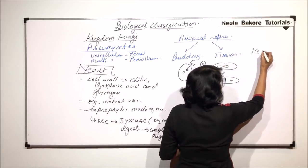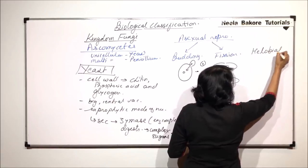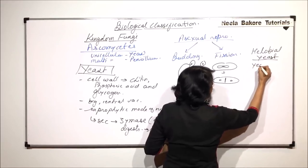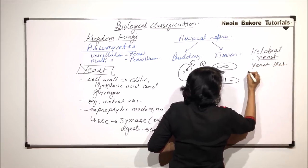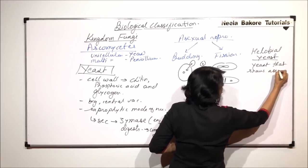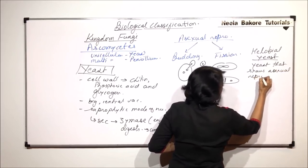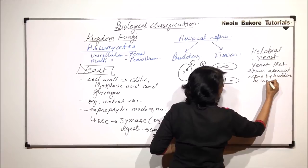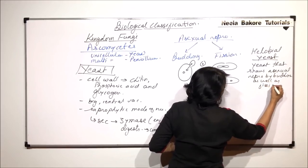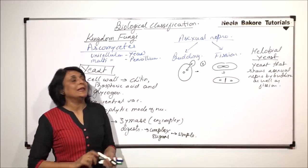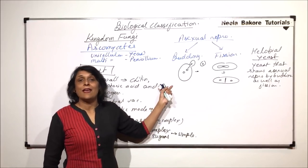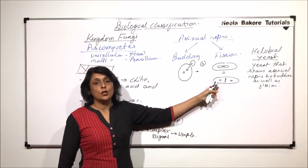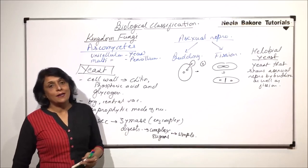Both are seen in different species of yeast. And there is one more type of yeast which are called hellobial yeast and hellobial means the ones, the yeast that shows asexual reproduction by budding as well as fission. Such yeast, they are called hellobial yeast. So, there are three ways in which this asexual reproduction can be seen. Purely budding, purely fission or it could be partly budding and partly fission.